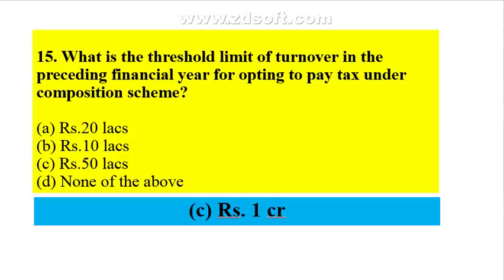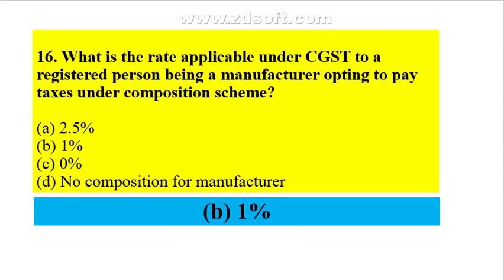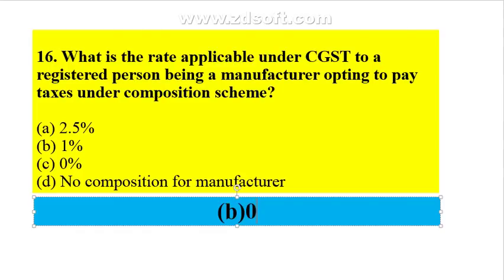What is the rate applicable under CGST to a registered person being a manufacturer opting to pay taxes under composition scheme? It is not 1% — it has been amended. CGST is 0.5% and SGST is also 0.5%. Total CGST and SGST is 0.5 + 0.5 = 1%. For CGST alone it is 0.5%.